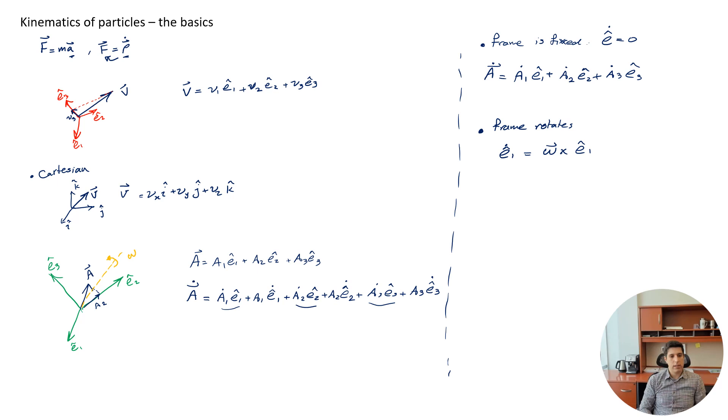So if I substitute these E1 dot, E2 dot, E3 dot, what I have is A dot, let's write it this way. A dot equals A1 dot*E1 plus A2 dot*E2 plus A3 dot*E3 plus the other terms. I can factor out omega, and I will have omega cross (A1*E1 plus A2*E2 plus A3*E3).